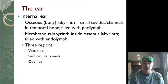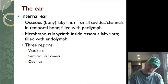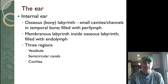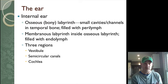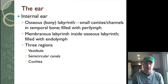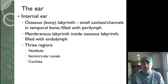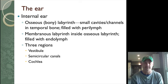The vestibule handles static equilibrium and head position. The semicircular canals handle dynamic equilibrium and rotational movements — when you spin around in a circle and get dizzy, that's because of the semicircular canals. The cochlea is where we house the receptors for hearing.